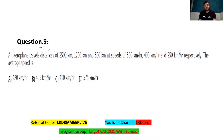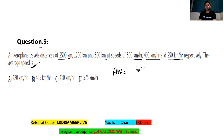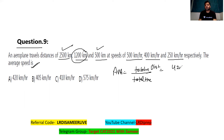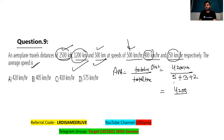Question number nine is from time, speed, and distance. An aeroplane travels 2500 km, 1200 km, and 500 km at speeds of 500 km/h, 400 km/h, and 250 km/h respectively. Average speed equals total distance divided by total time. Total distance is 2500 + 1200 + 500 = 4200 km. Time taken: 5 hours + 3 hours + 2 hours = 10 hours. Average speed = 4200/10 = 420 km/h — option A.